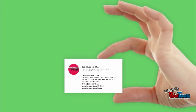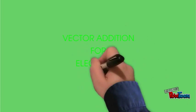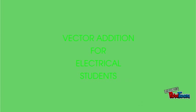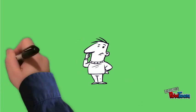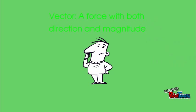Hi there, my name is Todd Lesky and this is a quick demonstration on how to perform vector addition as it applies to electrical students. Let's start with the basics. By definition, a vector is a force that has two distinct properties: direction and magnitude. In electrical theory, voltage is the force that acts upon free electrons in our circuits.